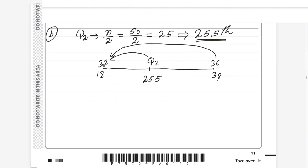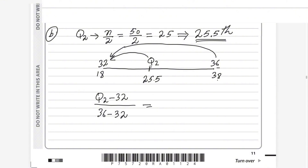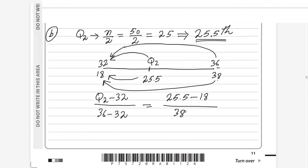The difference from 32 to Q2 is Q2 minus 32. The total class width from 32 to 36 is 36 minus 32 = 4. On the other side, we take the difference of the cumulative frequency values: 25.5 minus 18, divided by 38 minus 18.